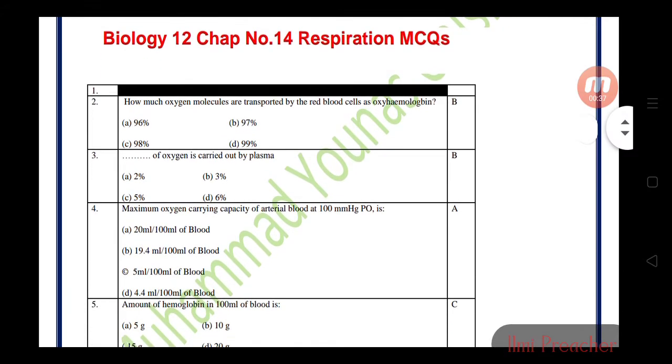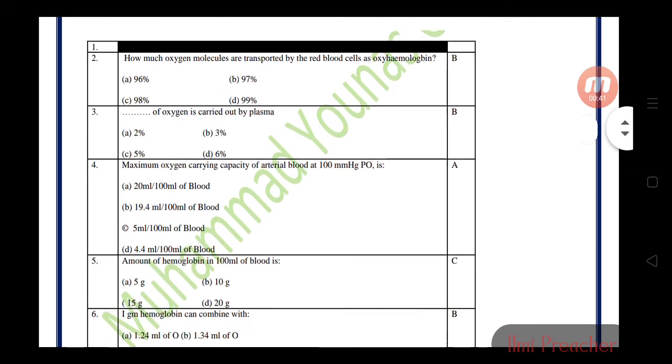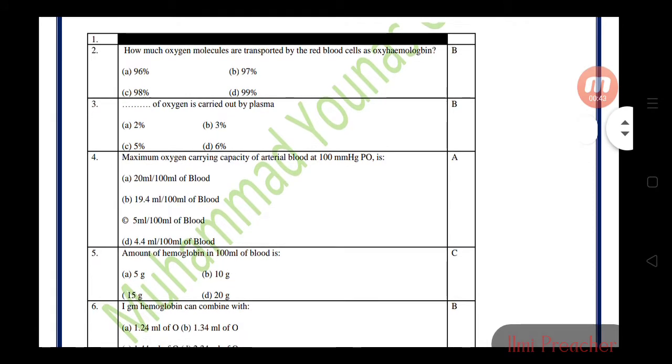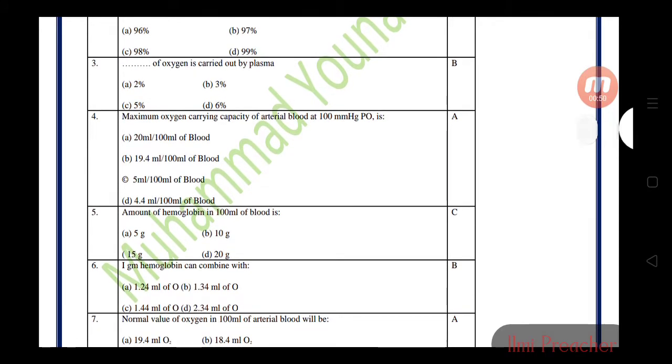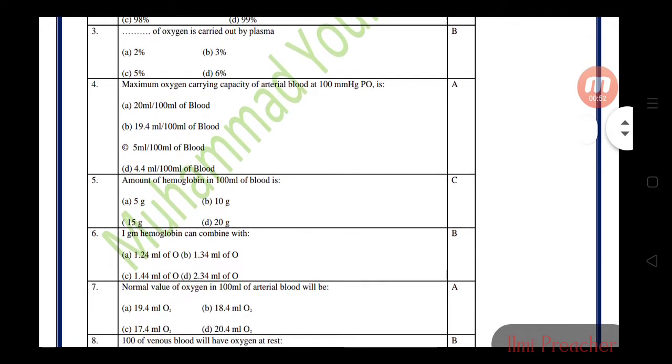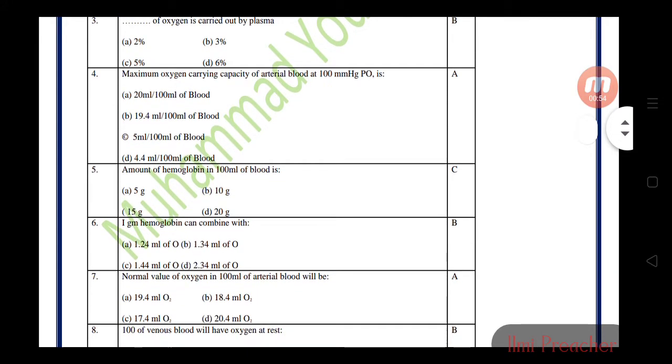MCQ number one: How much oxygen molecules are transported by the red blood cells as oxyhemoglobin? That is 97%. What percent of oxygen is carried out by plasma? That is 3%.